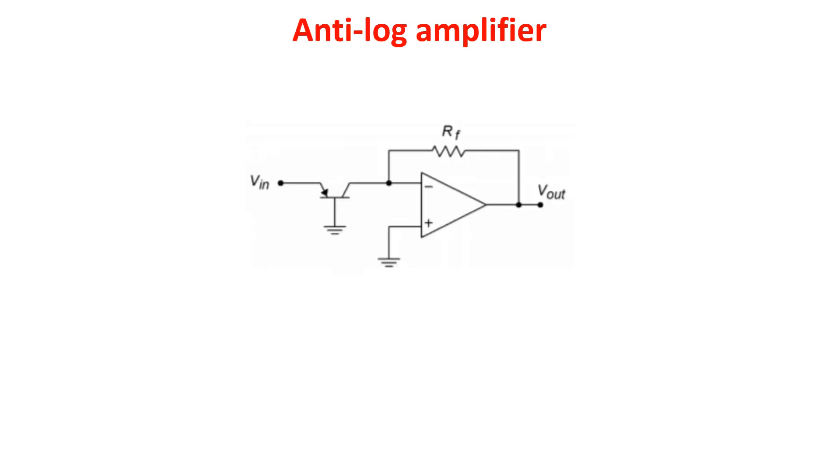The anti-log amplifier working is similar, but we put a transdiode BJT in the inverting input and we put a resistor on the feedback. The current on the BJT is this and it is proportional to the Euler's number to the power of Veb, the voltage on the emitter-base junction.